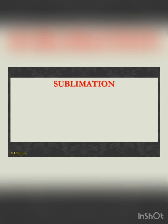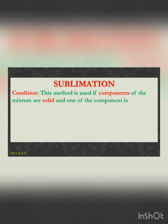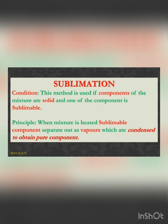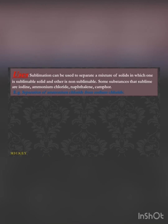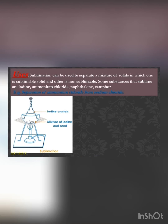Sublimation is the next technique. It is used to separate components of a mixture when one component is a solid and the other is sublimable — meaning it will directly change its state from solid to gas. When the mixture is heated, the sublimable component separates out as vapors, which are then condensed to obtain the pure substance. For example, this is used to separate ammonium chloride from sodium chloride.